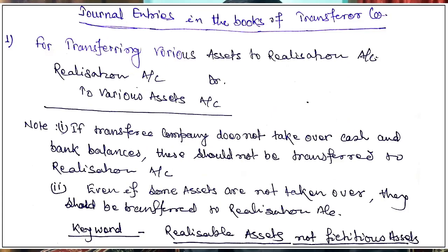Let's understand how to pass journal entries. First, we have to clear the balance sheet. Journal entry number one is for transferring various assets to Realization Account: Realization Account debit, to Various Assets Account. Assets are of debit nature, so to cancel them we credit them. Balance sheet assets get cancelled this way.